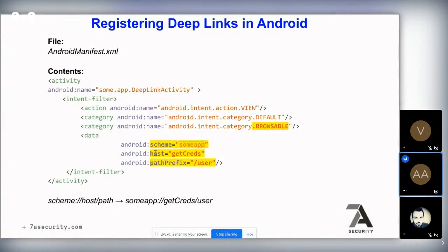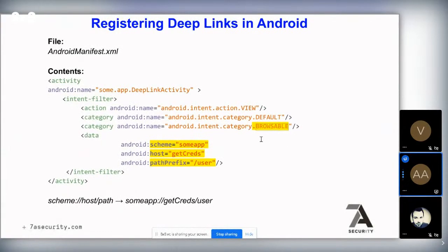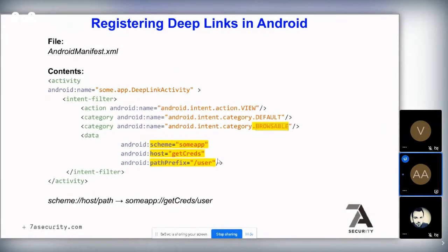In the manifest example, we have an Android scheme of 'someapp', the host is 'getcreds', and the path prefix is '/user'. This means the deep link would be 'someapp://getcreds/user'. When the 'browsable' category is present in the intent filter — which is optional — it makes attacks more interesting because the activity can also be invoked from the Android browser, enabling exploitation from a web page.